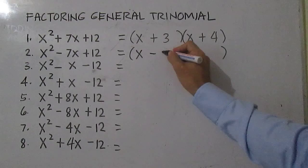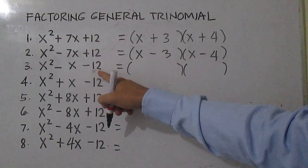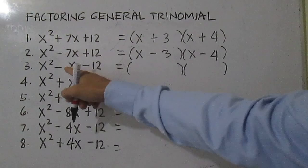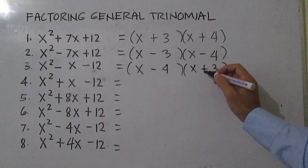So you have X minus 3 and X minus 4. For number 3, you have negative 12 as the third term, so think of two numbers that give you a product of negative 12 and a sum of negative 1. You have X minus 4 and X plus 3.